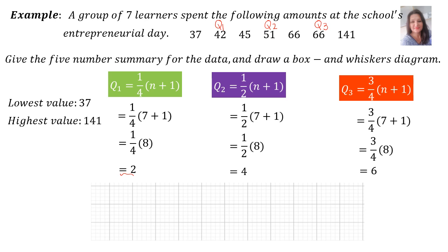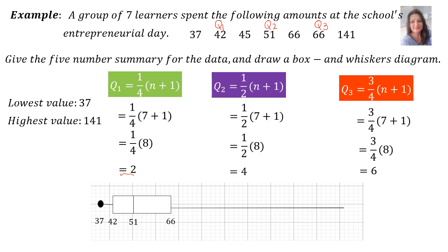On the box and whiskers diagram: the lowest value is 37, Q1 is 42, Q2 (the median) is 51, Q3 is 66, and the highest value is 141.